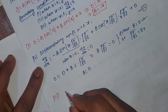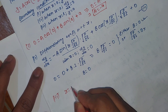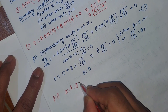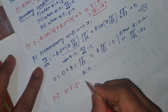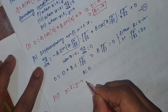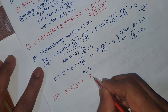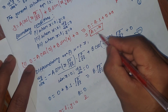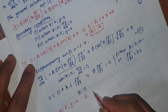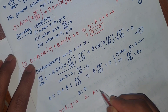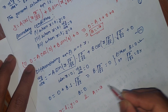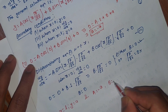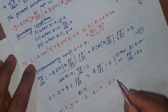Now applying the third boundary condition: when x equals L, y equals a. Substituting A equal to minus a (from BC1 applied properly) and B equal to 0 into the general solution equation.